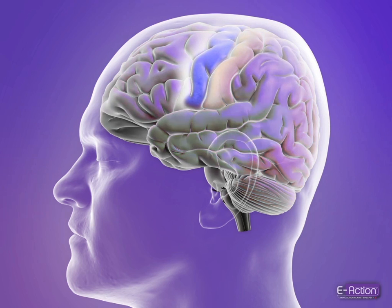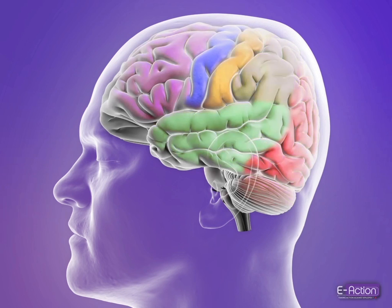The motor cortex has specific regions that direct movement of all parts of the body. If a partial seizure occurs in this part of the brain, it will affect movement of specific muscle groups.